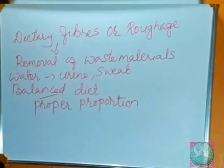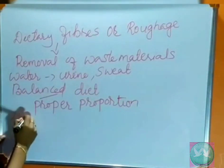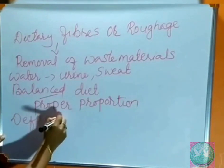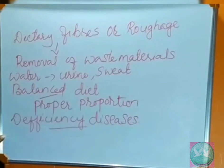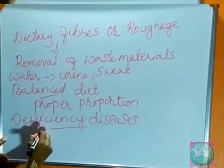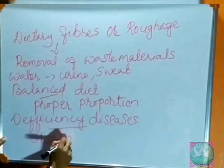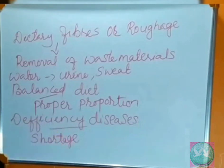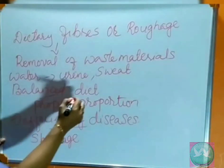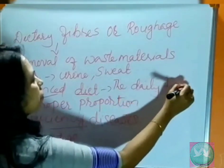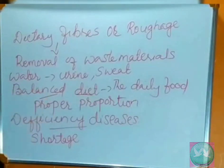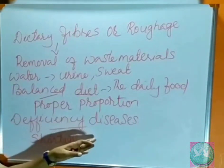Next one is deficiency diseases. What do you mean by deficiency? Deficiency means shortage. Due to the lack of nutrients, there is a possibility of getting different kinds of diseases. The daily food we take is called our diet. In that diet, if any nutrients are less, it may cause deficiency diseases.